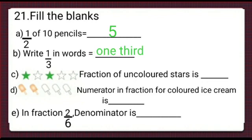Moving to part c, here we can see 5 stars are there. Fraction of uncolored stars is blank. In a fraction, there are 2 parts, numerator and denominator. Numerator is a number of special parts and denominator is a number of total parts. So, total number of stars is 5.